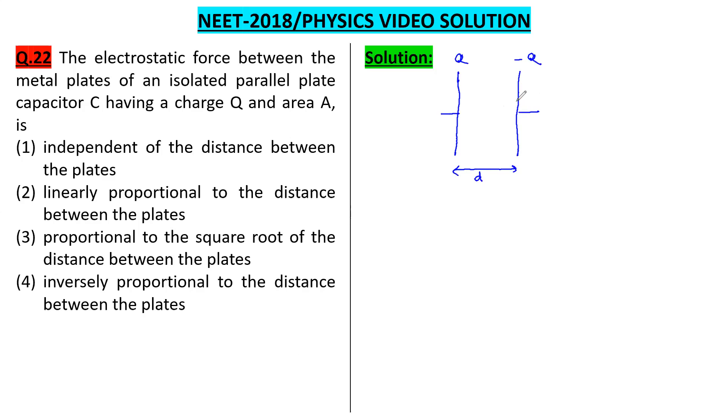The electric field due to one plate at the location of the other plate is given by: the electric field at this location would be E equals Q upon 2A epsilon 0. This is the electric field at the position of plate 1 by plate 2.